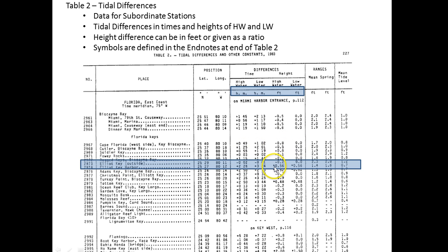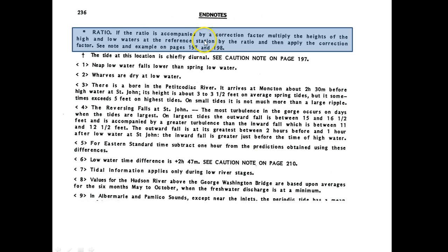Most of the corrections are additions and subtractions, but you will occasionally find this little symbol — like a little star — on the high and low water corrections. When you see that little star, it's going to be a ratio: instead of adding or subtracting, you're going to multiply that times your reference station value. At the end of table two there are end notes explaining that the symbol means it's a multiplier. You can figure that out further at table three.